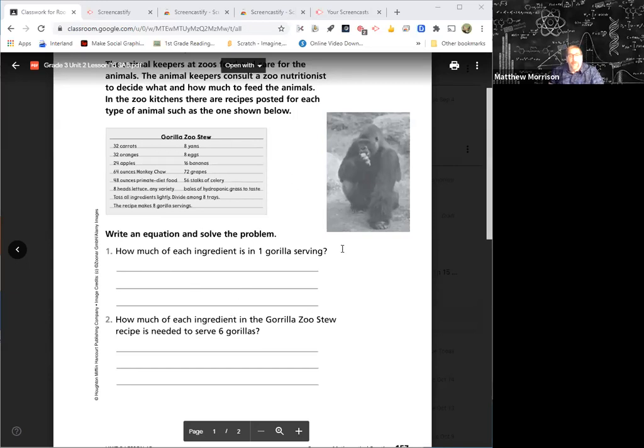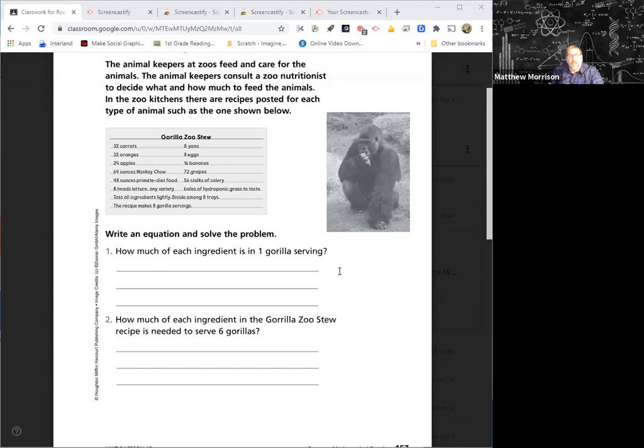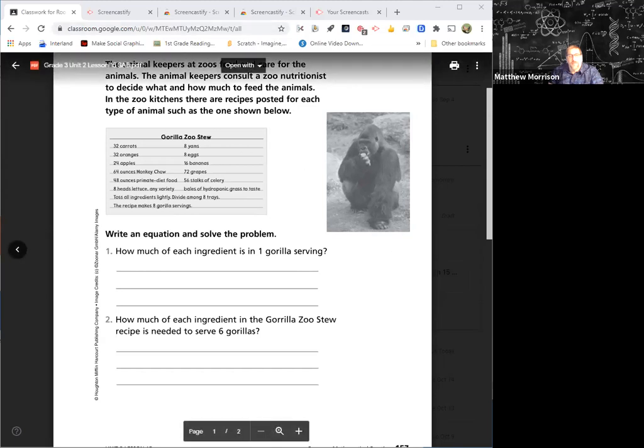Okay, so we're back to our problem. It says how much of each ingredient is in each gorilla serving? We have to look at them, right? So we know that this right here is for eight. We can't just say 32 carrots. What would my equation be? It's going to be your item divided by eight. We have to take our how many and divide by eight.